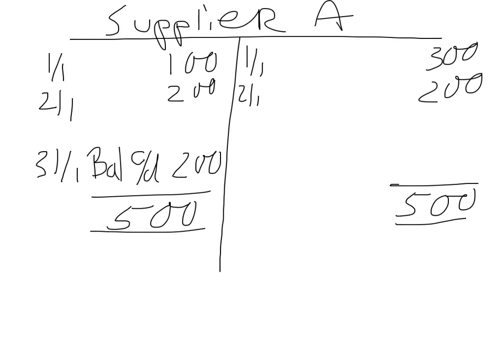And the last step you need to do is essentially transfer this balance down to the opposite side on the first day of the next month, which then becomes the first of the second month. And you call that balance BD, and it's 200 pounds.